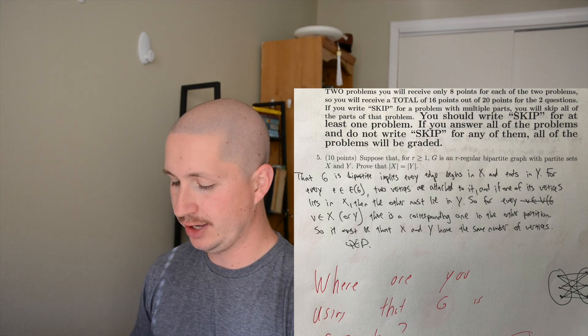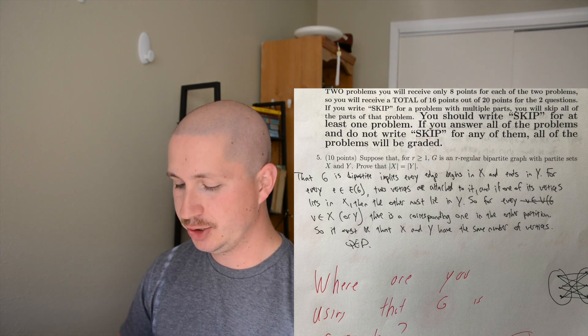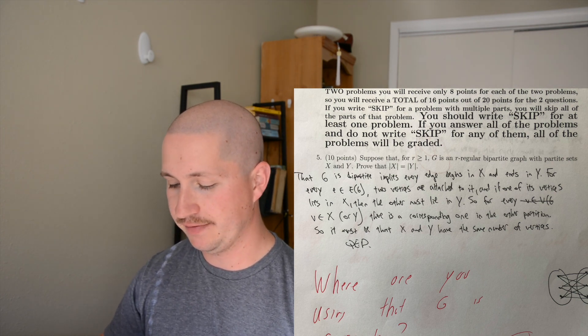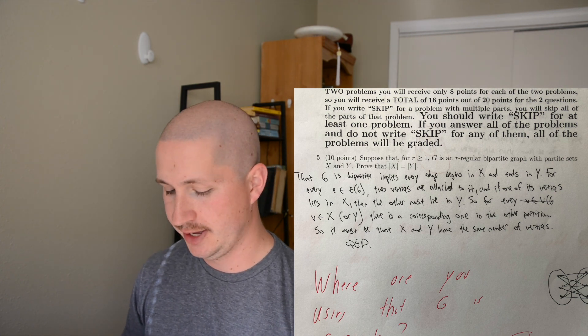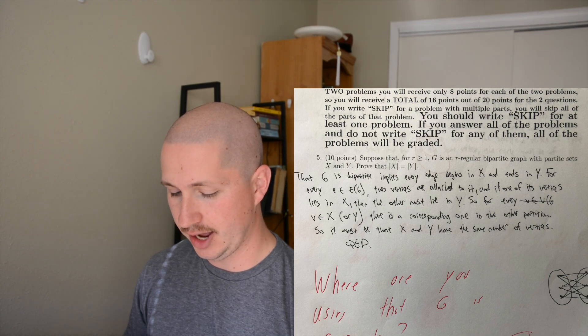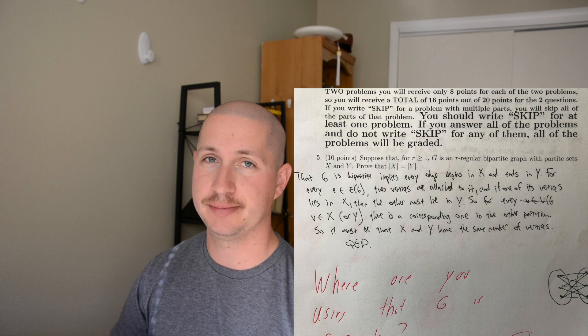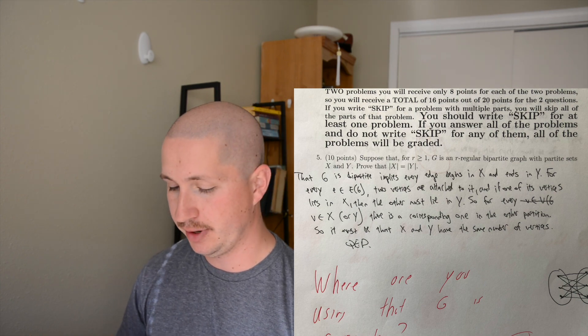Back to this - there's a corresponding one in the other partition, so it must be that X and Y have the same number of vertices, which is what the cardinality is, and that's the end of the proof. I guess he didn't like it that I didn't use the fact that G was r-regular. Perhaps that would have made it easier, but he didn't say my proof was wrong, though he still took a point off. I could probably argue it, but I'm not going to.